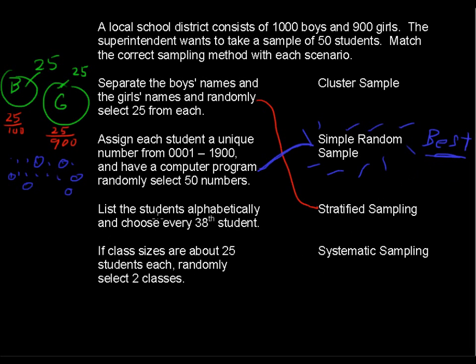Okay, by process of elimination, we only have two left here, but let's run through each one. List the students alphabetically and choose every 38th student. Every 5th student, every 10th student, whatever it is, if you are choosing by this system, it's systematic.